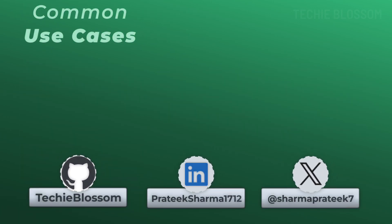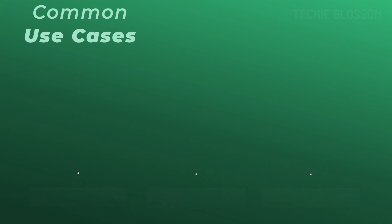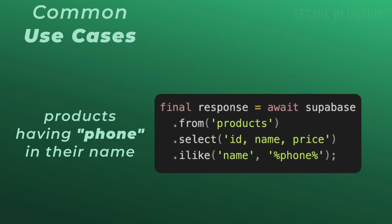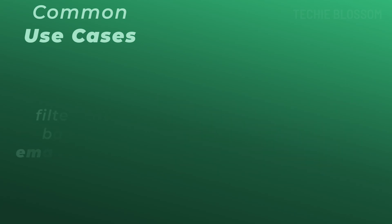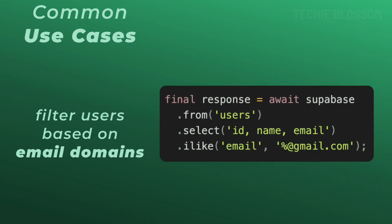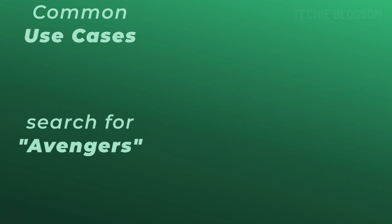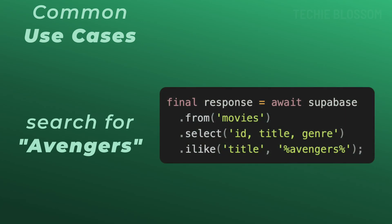Now let's look at some other use cases for like and ilike. In an e-commerce app, users might search for products using partial names — for example, to find products with phone in their names, you would write ilike on the name column and mention phone. In a subscription service, you might filter users based on email domains like Gmail accounts, writing @gmail.com in the ilike function. In a movie app, a user might search for Avengers with a capital A and expect results regardless of capitalization — so you can write ilike on the title column with Avenger. These examples show like and ilike making searching flexible and intuitive.